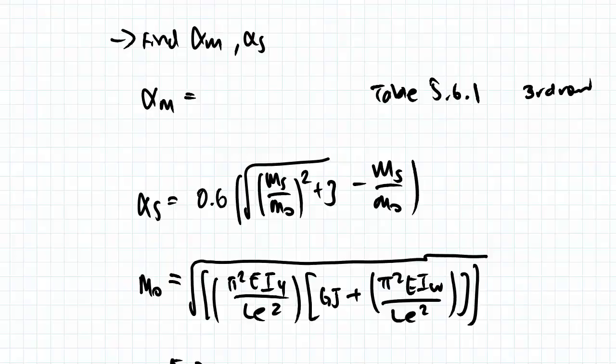Alpha m finds the non-uniform movement constant whilst alpha s accounts for slenderness reduction.